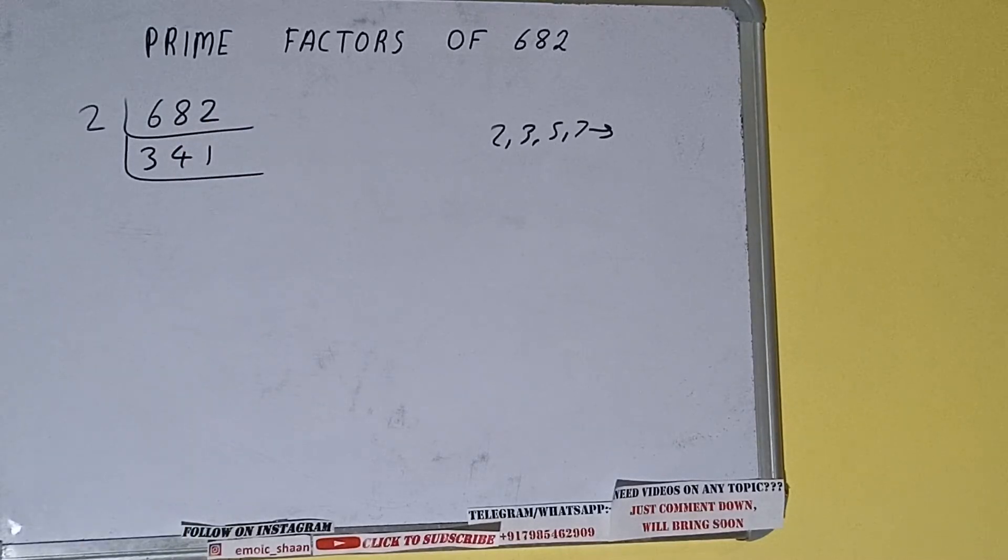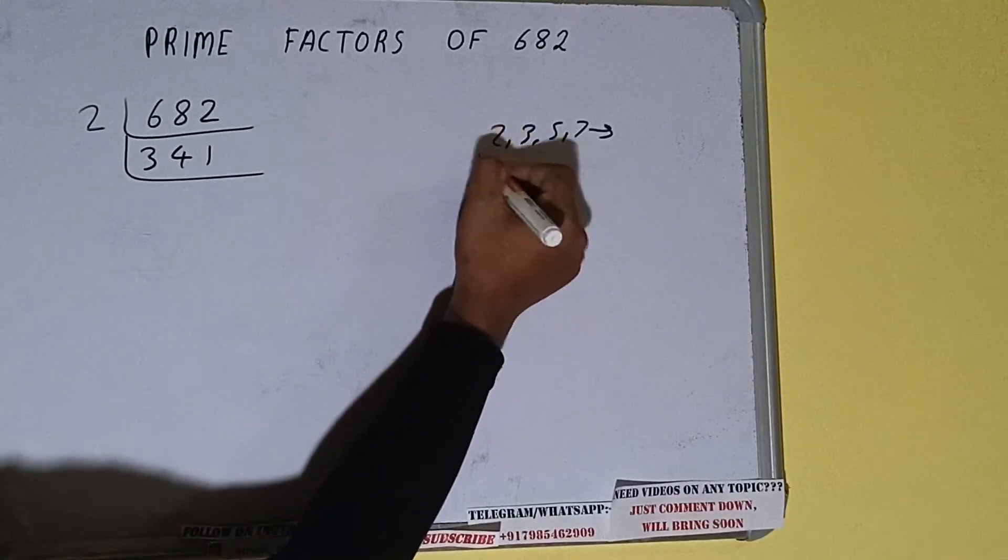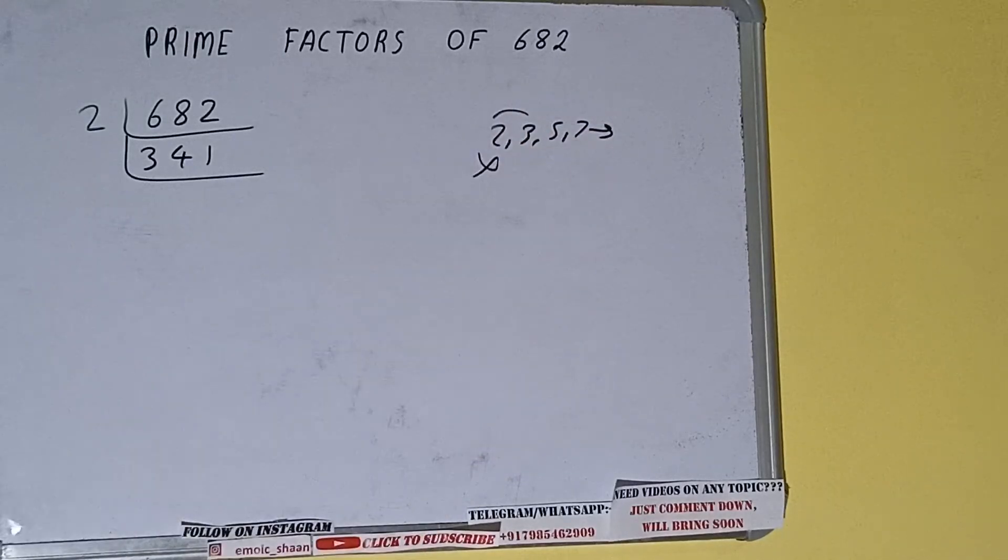Now is this 341 further divisible by 2? The answer is no, because the number is odd. So we'll check with the next lowest prime number, that is 3. Is it divisible by 3? Let's check.